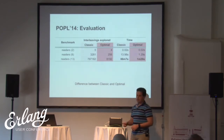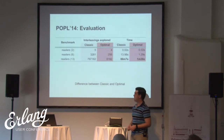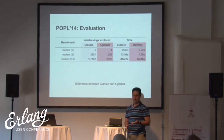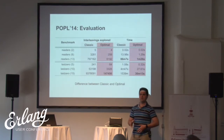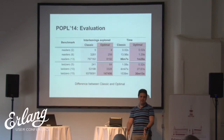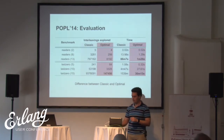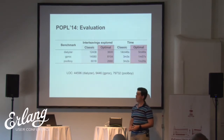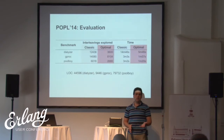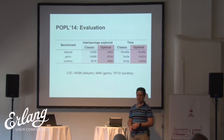Does it matter? Well, maybe it does. The exact same example I showed you — the readers-writers benchmark, where the parameter is how many threads are doing the reading — can get you with the classic method to an exploration that takes 86 minutes, whereas with our optimal technique, this takes about a minute. And this can get even worse with examples with more dependencies and more possible interleavings. This takes a test that takes a day and an hour and strings it down to 30 minutes. Both are efficient, essentially exploring the same interleavings, but classic DPOR will abort some of them while optimal will never waste effort. And this actually reflects on real code as well — we ran these tools on Dialyzer, ZPROC, and some tests from PoolBoy, and still managed to get some benefits.